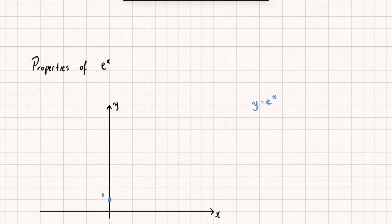Putting all of that information together, we can draw a sketch: the graph starts close to 0, grows, passes through the y-axis at 1, and then grows up exponentially. So this is what the graph of e to the x looks like.